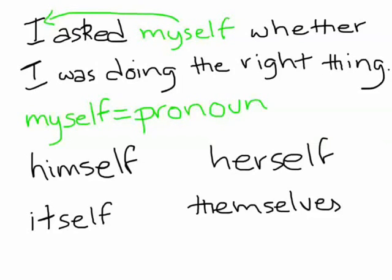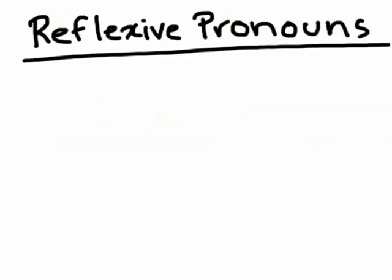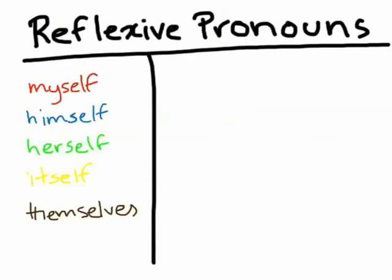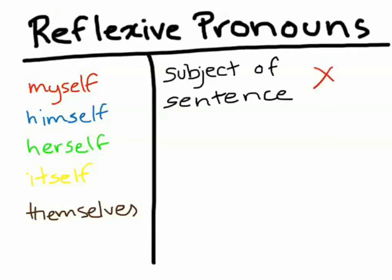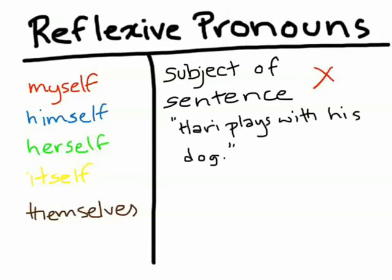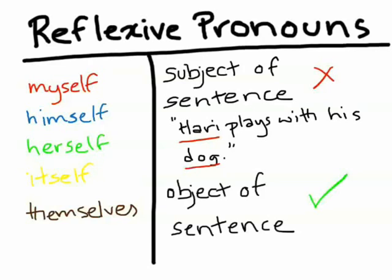These pronouns share one main feature: none of them can be used as the subject of a sentence. The subject of a sentence, as we know, is the noun that performs the action. The object is the noun that the action is being performed upon. It is this role that reflexive pronouns play.